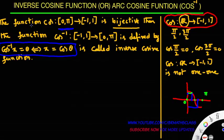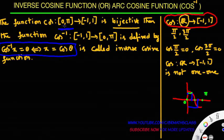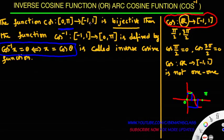Try to understand: the function cos from closed interval [0, π] to closed interval [-1, 1] is a bijective function. If the function is bijective, then only its inverse exists. That's why we restricted the domain of the cos function from set of all real numbers to closed interval [0, π]. So, if cos function domain is restricted to [0, π] to [-1, 1], then it is bijective. If it is bijective, then its inverse exists and cos inverse is defined from closed interval [-1, 1] to closed interval [0, π]. It is defined by: cos inverse x = θ if and only if x = cos θ.